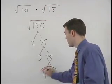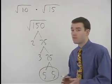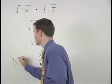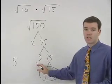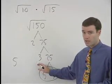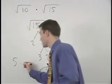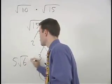Since we have a pair of 5's, a 5 will come out of the radical. The 2 and 3 that are left over will stay inside the radical, multiplying together to make 6. So we have 5 root 6.